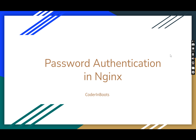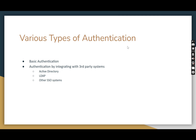When we deal with production-grade websites or web APIs, we have to configure multiple security mechanisms to protect the API. One such mechanism is password authentication. There are different ways to achieve password authentication. One is basic authentication, and the second is authentication by integrating with third-party systems. Basic authentication is the simplest form of enabling authentication in any system.